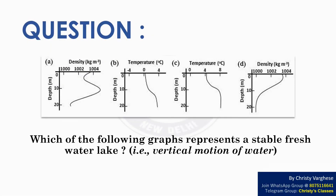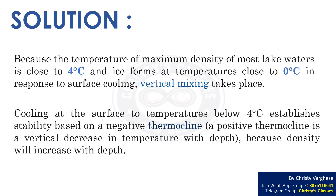Question: Which among the following graphs A, B, C, and D represent a stable freshwater lake, i.e., vertical motion of water?